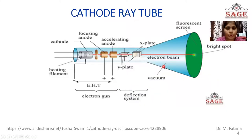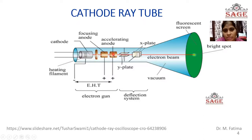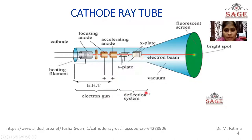This is the cathode ray tube. The heart of the CRO is the cathode ray tube. You can see this cylindrical cathode, inside of which a filament is present. This is the pre-accelerating anode, this is the focusing anode, this is the accelerating anode, this is the Y-plate (vertical deflection plate), and this is the X-plate (horizontal deflection plate). The cathode and accelerating anode form the electron gun assembly, and the Y-plate and X-plate form the deflection system. All this is placed in a vacuum glass tube, and this is the screen of the CRO.